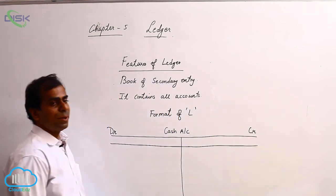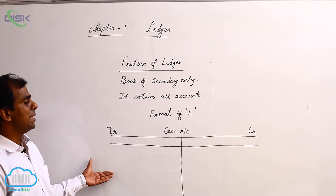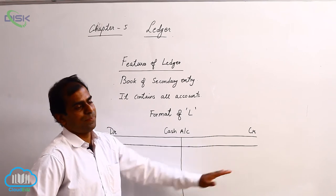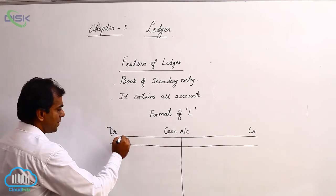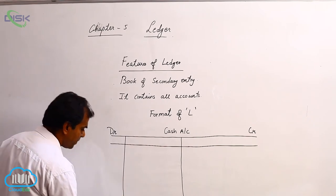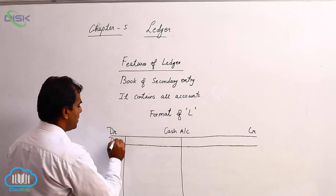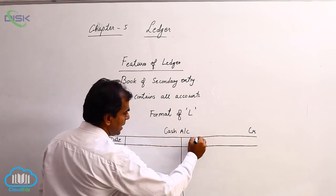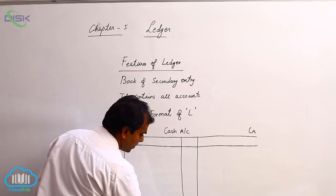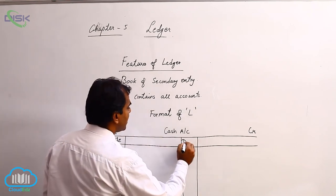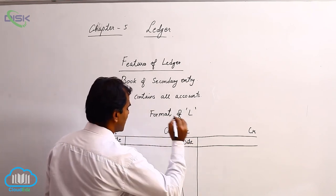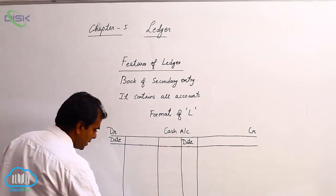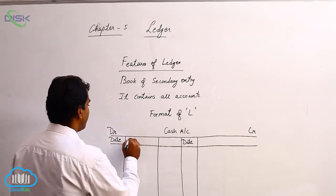The number of columns on either side — that is the debit side and the credit side — are the same. The first column is for your date, on both debit and credit sides. The second column is called particulars.